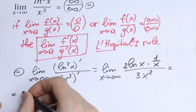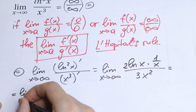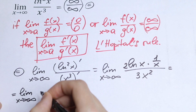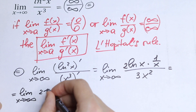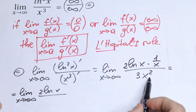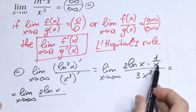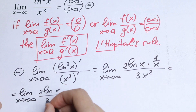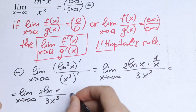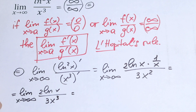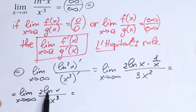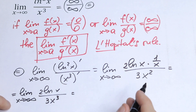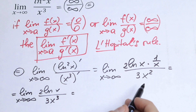After simplifying, we have the limit as x approaches infinity of 2·ln(x) over 3x³. Using direct substitution again, we still get infinity over infinity, so it's good to apply L'Hôpital's Rule once more.